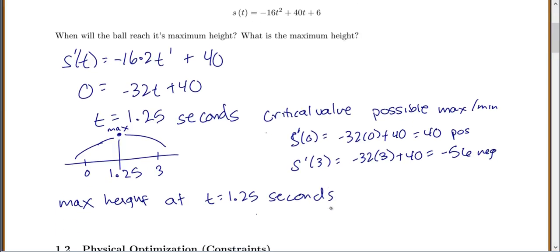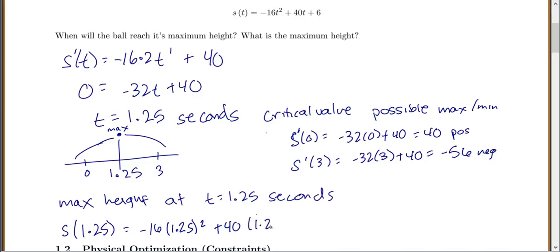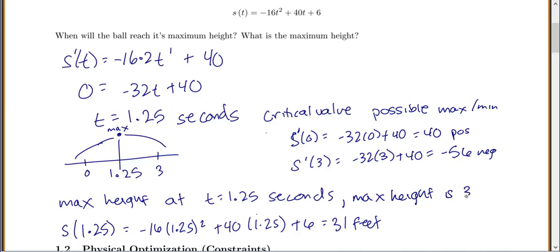Sometimes we want to know the actual maximum height. To find your height, you plug your time into the original function s(t). So s(1.25) = negative 16 times 1.25 squared plus 40 times 1.25 plus 6, which equals 31 feet. So our max height is at 1.25 seconds and the max height is 31 feet.